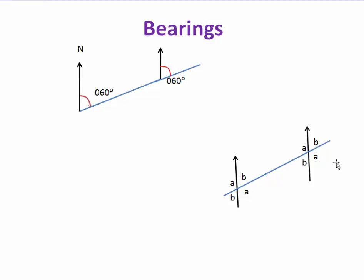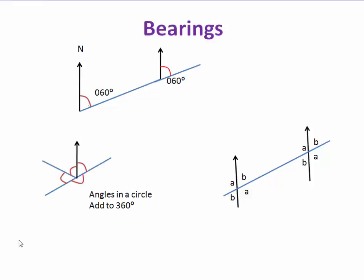With parallel lines cut by a transversal, we also get vertical angles, which are equal. Just revise parallel lines and transversals and how they relate to bearings. Angles in a circle add up to 360 degrees — you also need to know this when working with bearings. So if we want the bearing from north and we know an angle, it would be 360 degrees minus that angle.